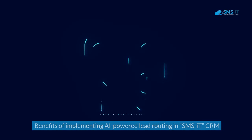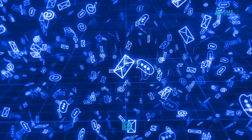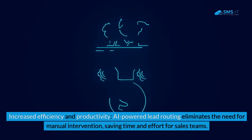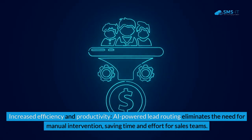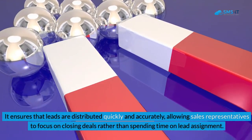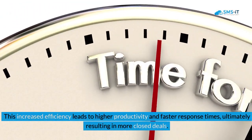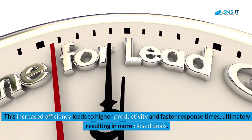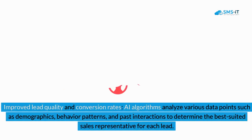Benefit 1 — Increased Efficiency and Productivity: AI-powered lead routing eliminates the need for manual intervention, saving time and effort for sales teams. It ensures that leads are distributed quickly and accurately, allowing sales representatives to focus on closing deals rather than spending time on lead assignment. This increased efficiency leads to higher productivity and faster response times, ultimately resulting in more closed deals.